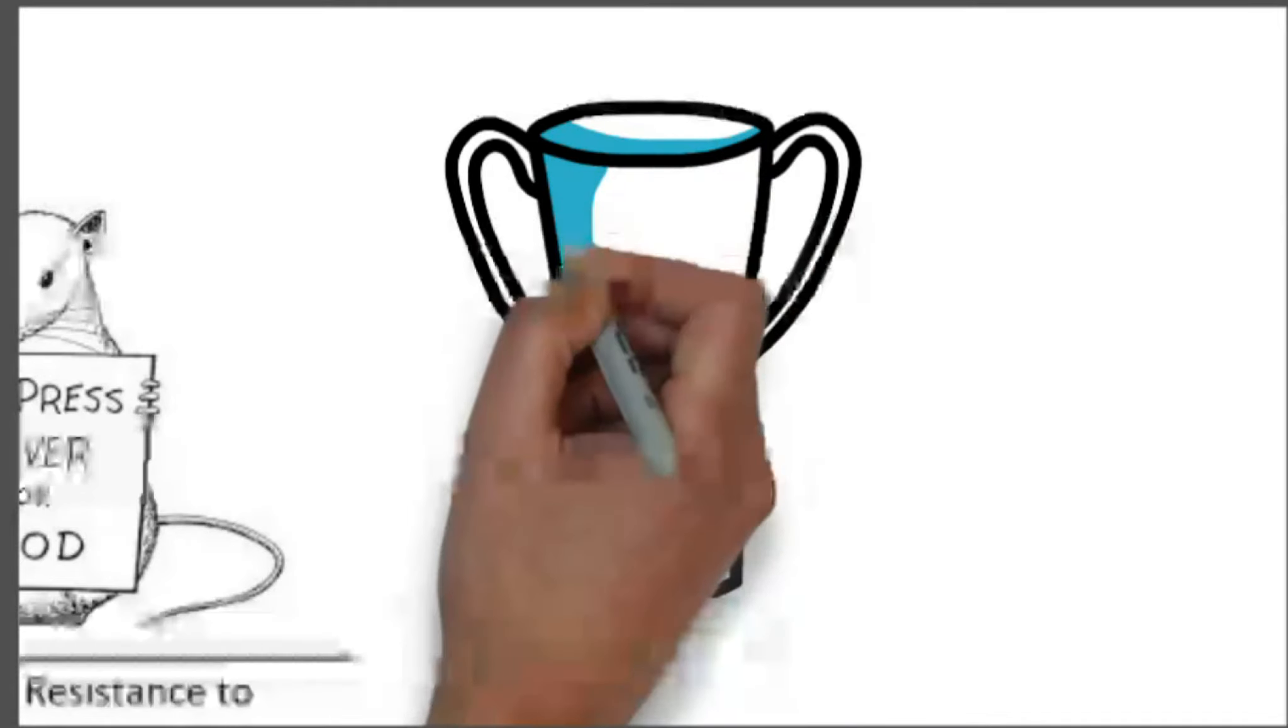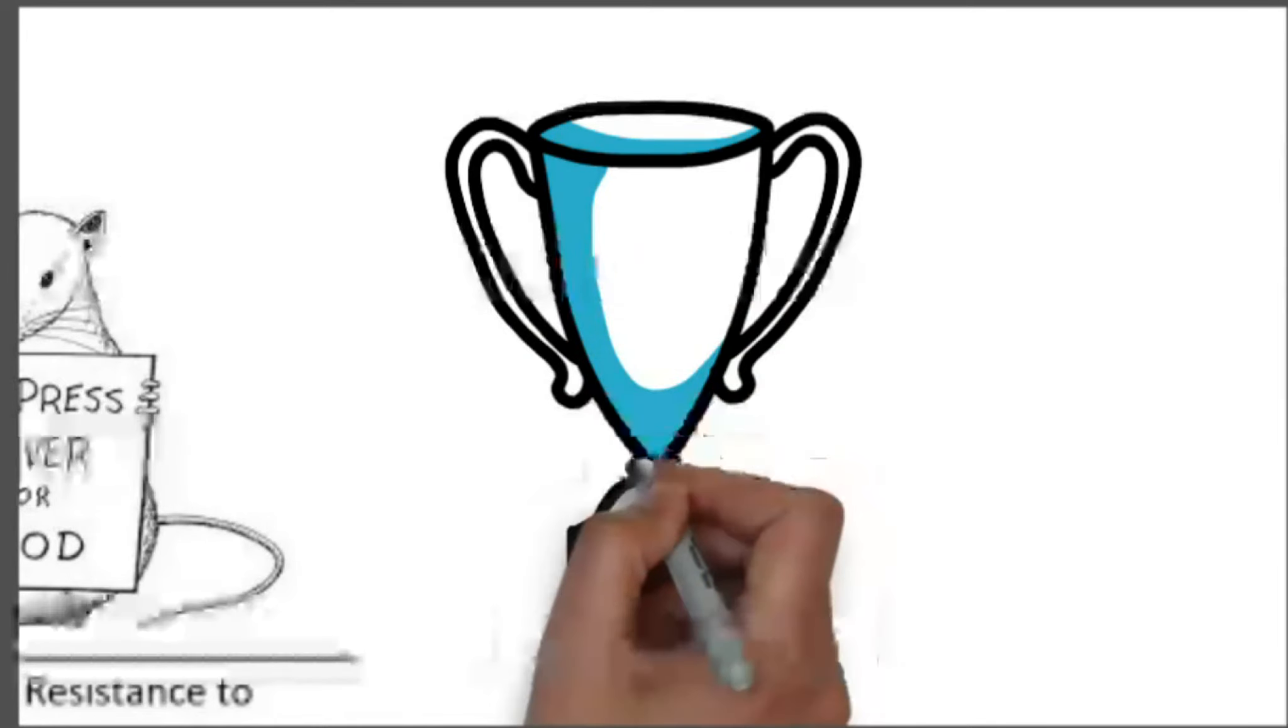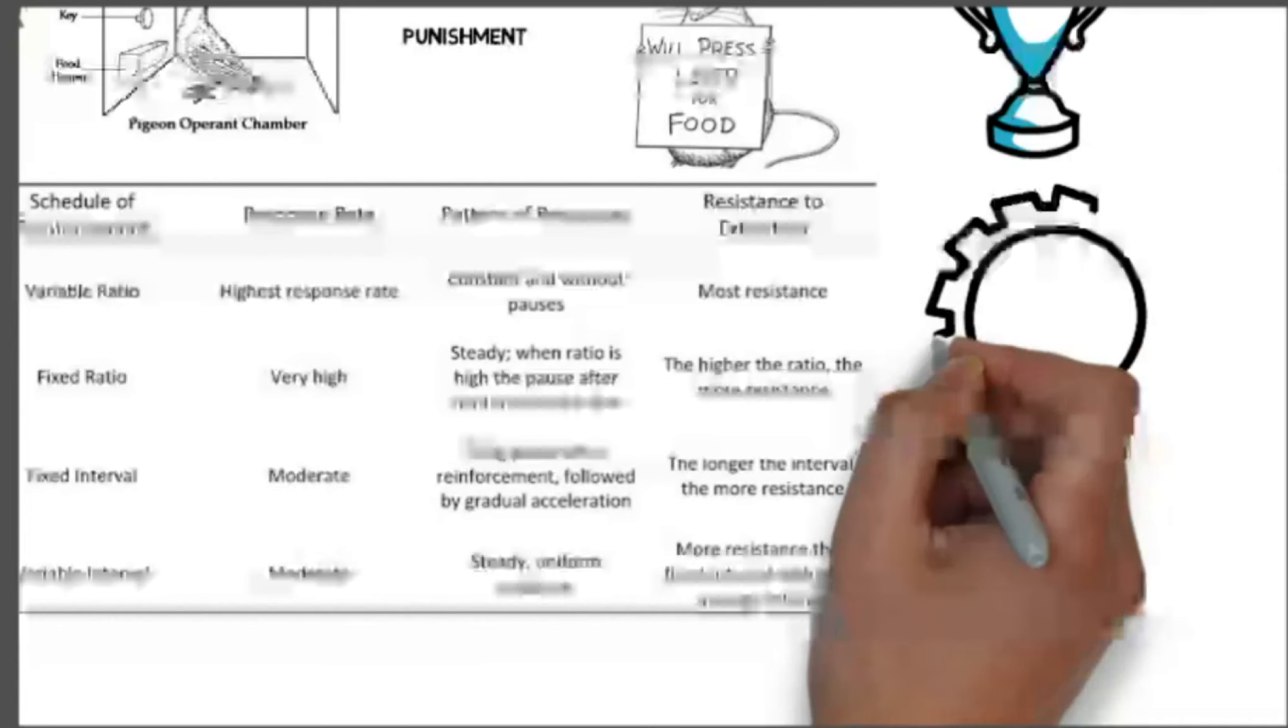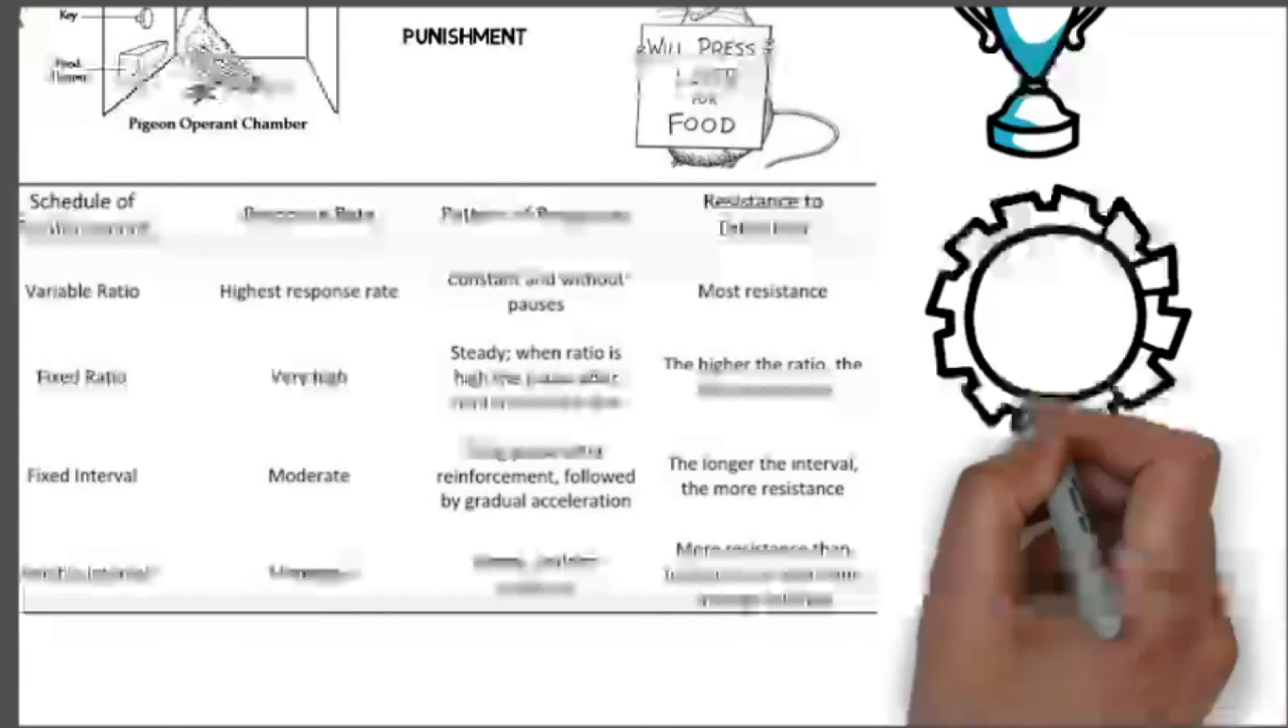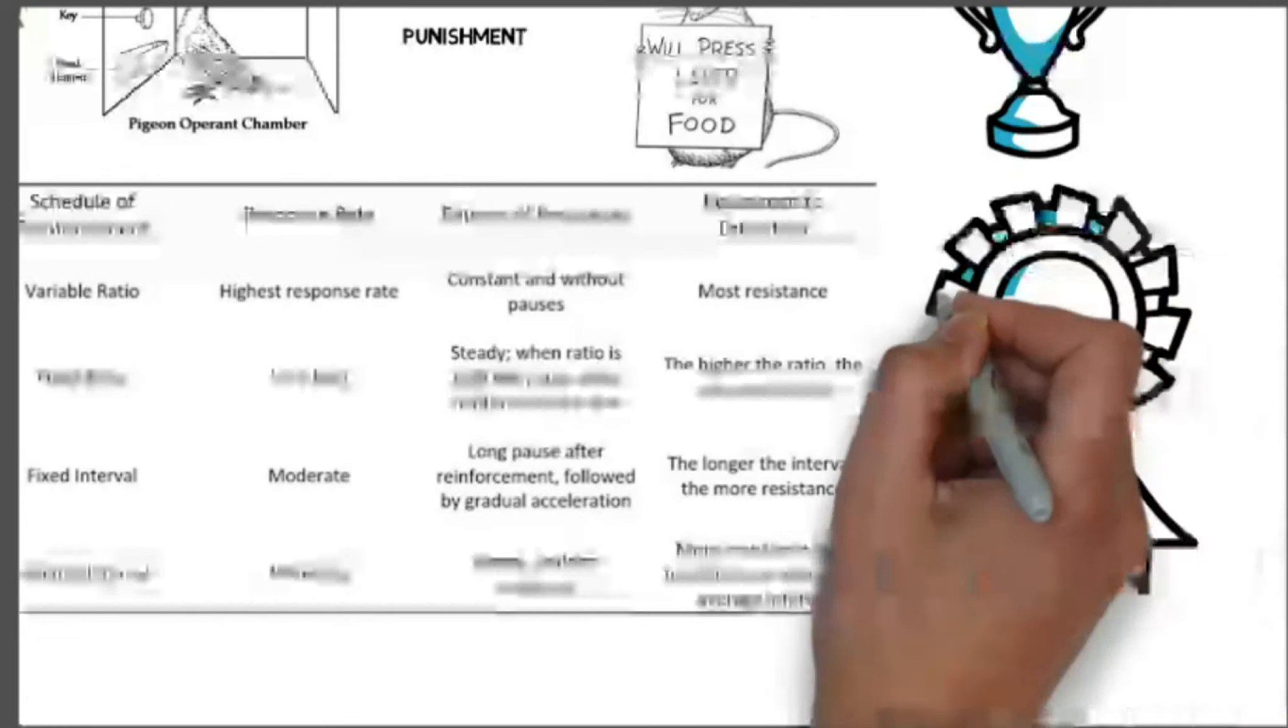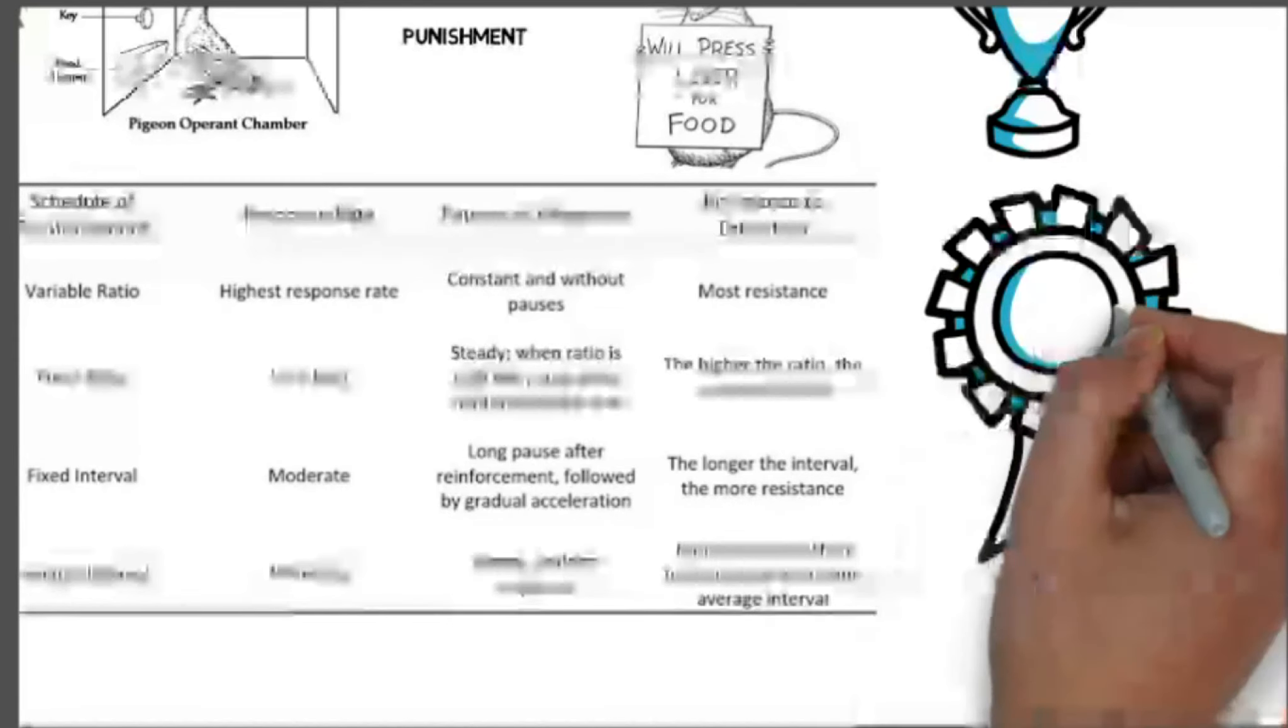There are some implications of the theory of operant conditioning. The first one is that teaching is the arrangement of contingencies of reinforcement, which expedite learning. For effective teaching, teachers should arrange effective contingencies of reinforcement. For example, for self-learning of the student, the teacher should reinforce student behavior through a variety of incentives, such as a prize, a medal, a smile, a praise, affectionate patting on the back, or giving of higher marks.